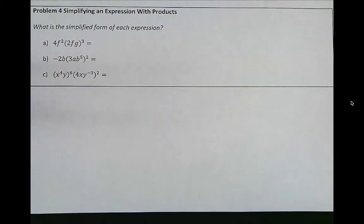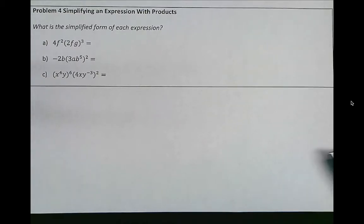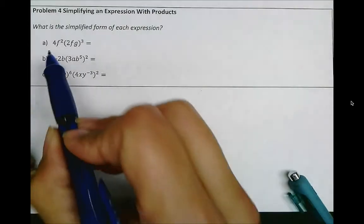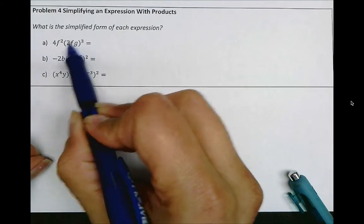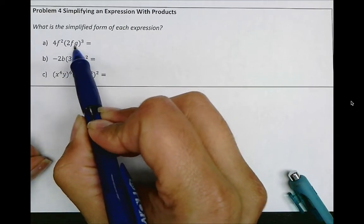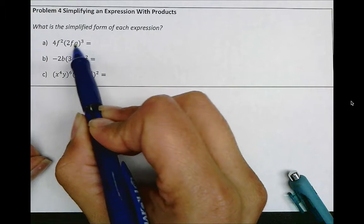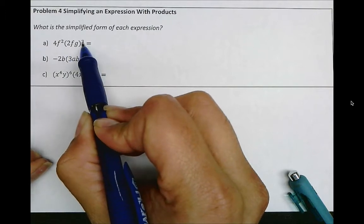In problem 4, we are simplifying an expression with products, still using the concept of raising a power to a power. So let's start with 4f to the power of 2 times 2fg, all raised to the power of 3.